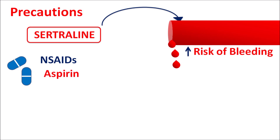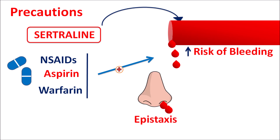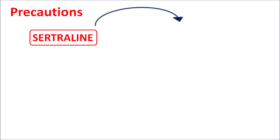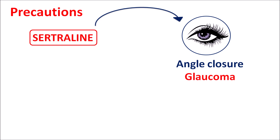The risk of bleeding increases when sertraline is combined with anticoagulants such as warfarin. For instance, it can result in increased bleeding from nasal blood vessels causing epistaxis, or clotting of blood resulting in hematoma. Glaucoma and gastrointestinal bleeding can also be observed. All these should be closely monitored when this drug is prescribed for longer periods. Similarly, this drug can increase angle-closure glaucoma, so in patients with narrow angles, intraocular pressure should be closely monitored.